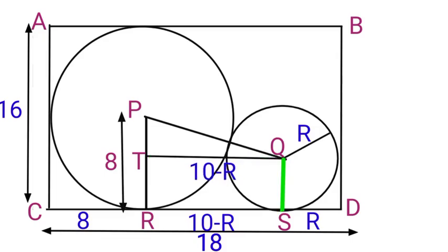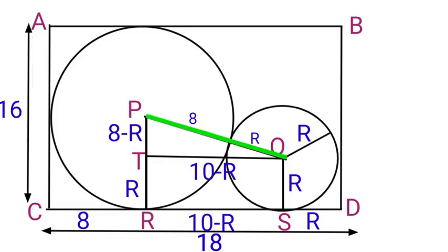QS is also the radius of the small circle, so let us call it R. QS and TR are equal, so TR will also be R. PR equals 8, so here PT equals 8 minus R. For length PQ, the radius of the big circle is 8 and the radius of the small circle is R, so line PQ will equal 8 plus R.